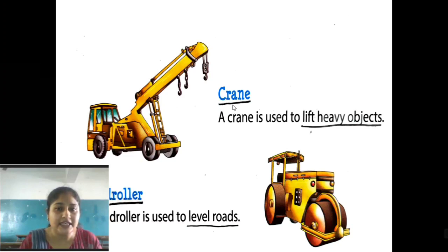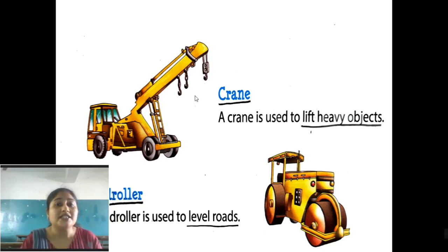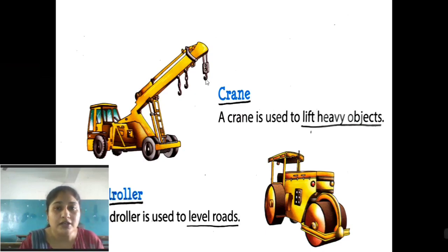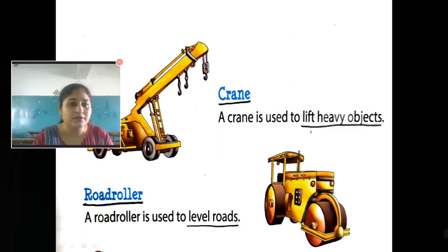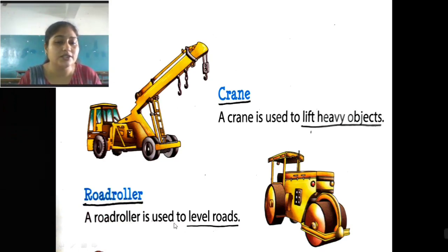Crane — C-R-A-N-E. A crane is used to lift heavy objects. Heavy objects are things that are very heavy and we normal people cannot lift them, so we use this vehicle — the crane — for lifting heavy objects. You can connect the heavy object to the crane and easily lift it.